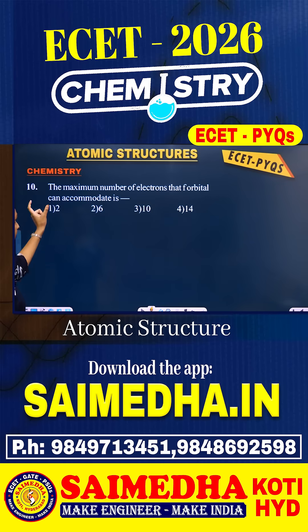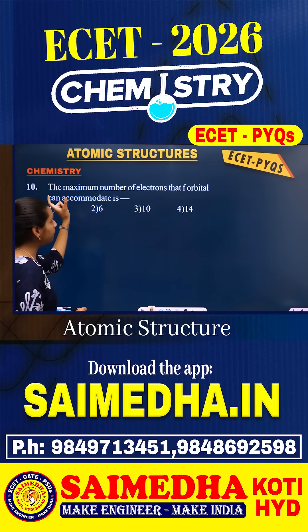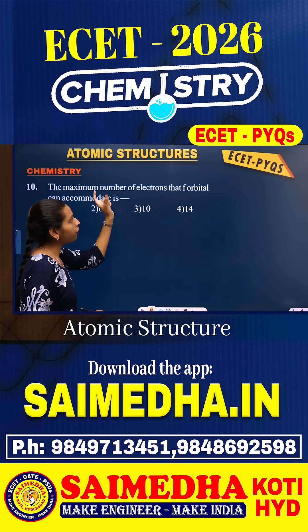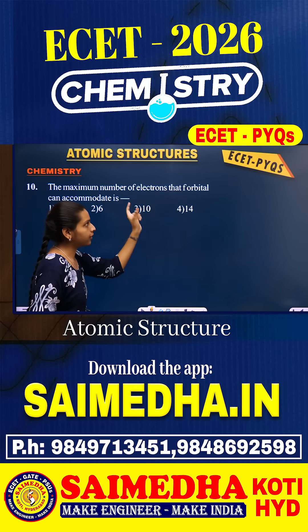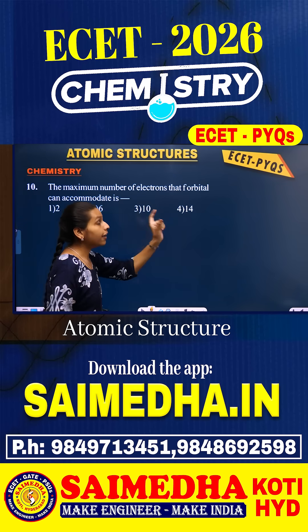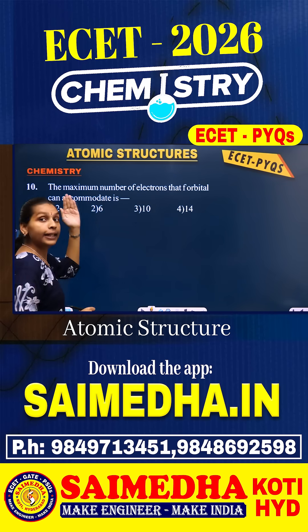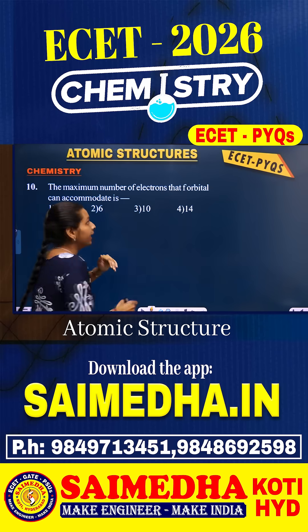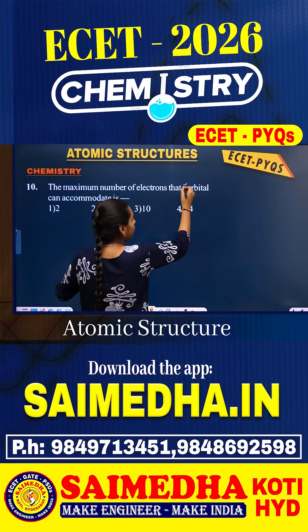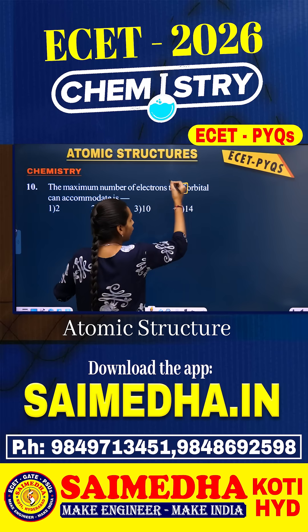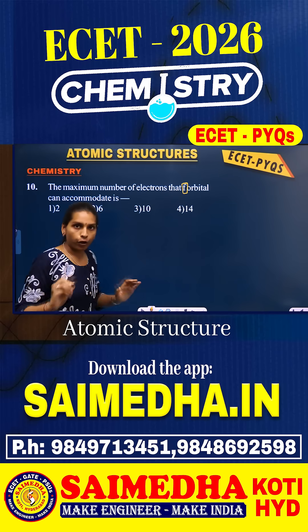The question says: the maximum number of electrons that the F orbital can accommodate is. It is asking for the F orbital. The answer is 14.